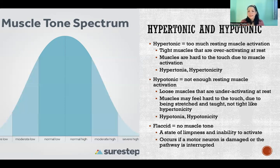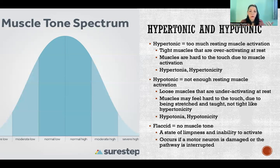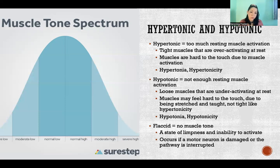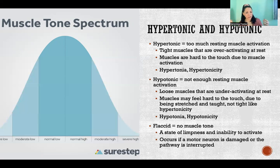Hypotonic muscles tend to be in a stretched, lengthened position because if they're not generating enough muscle tension at rest, they're losing the tug of war with the other muscles crossing that same joint. The opposing muscles are always generating a certain amount of tension — at minimum their resting muscle tone. So if one side is hypotonic and the other side is hypertonic, that creates an imbalance where the hypertonic muscles are winning the tug of war and the hypotonic muscles are losing. When you palpate the hypotonic muscles, they'll still feel tough and hard to the touch because they tend to be in a stretched, lengthened position.